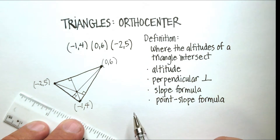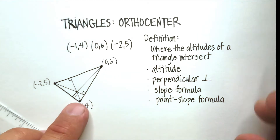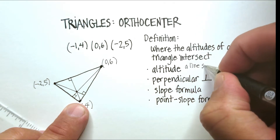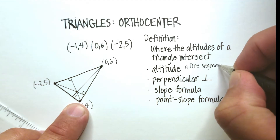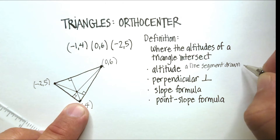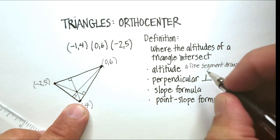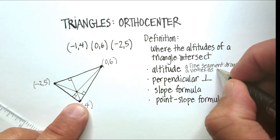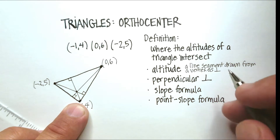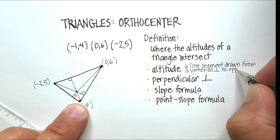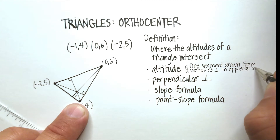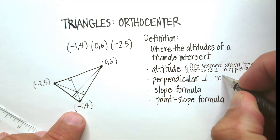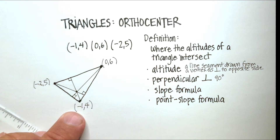That intersection point is called the orthocenter. An altitude is a line segment drawn from a vertex, perpendicular (symbolized by the upside-down T) to the opposite side. Perpendiculars form 90-degree angles, symbolized by that little square.